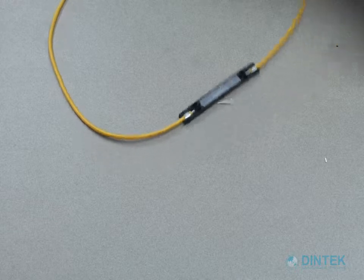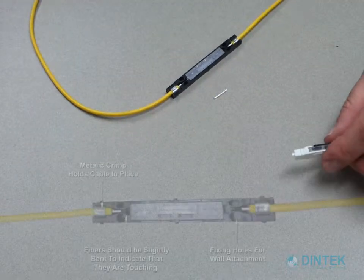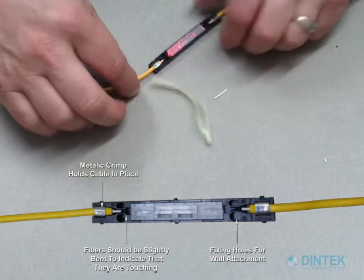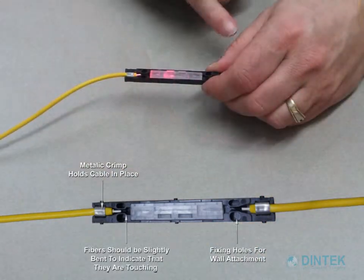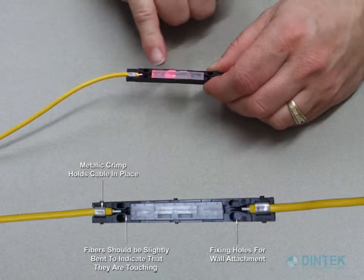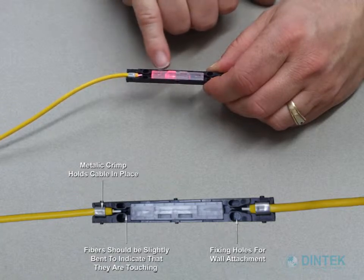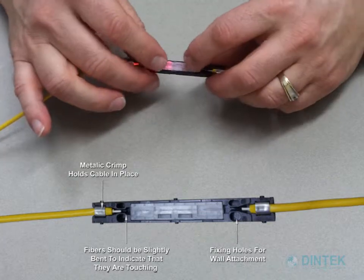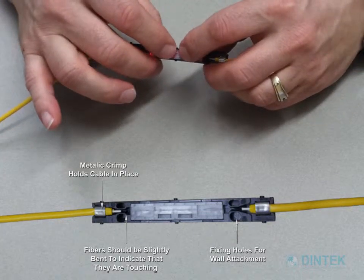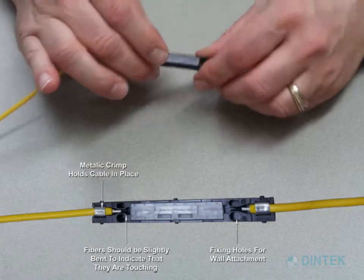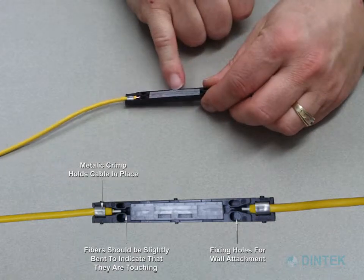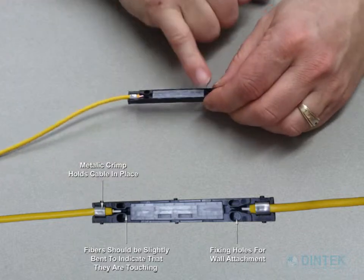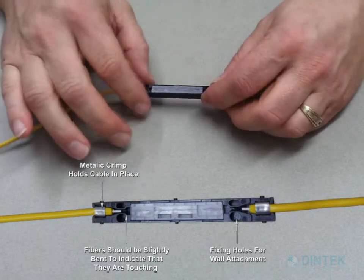If we take our visual fault locator and plug this into the connector end, we can see the light is traveling. It's ending at this point and it's escaping because the two fibers haven't been locked in place. We will now take our fingers, push the locking tabs down. And we can see the light is now being coupled into the second fiber and it's traveling through.